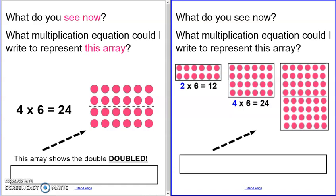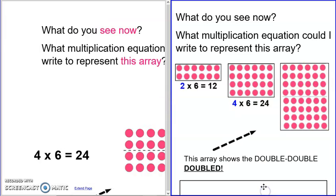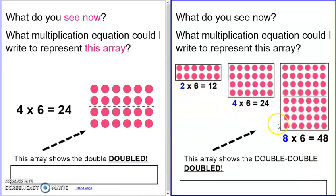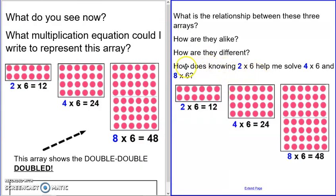What multiplication equation could you write to represent this one? What happened here? Pause the video and answer. Here was my first double: I doubled six, then doubled that, then doubled that again. So this is the double, double, doubled on the bottom. This would be eight times six because we had four rows of six and doubled that to eight rows of six — 24 dots doubled is 48 dots.